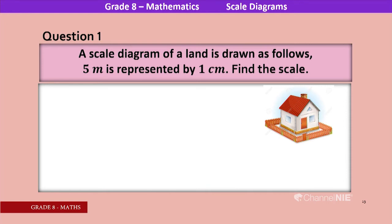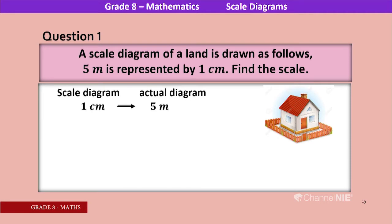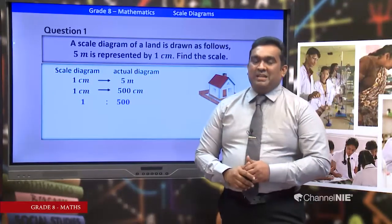Question 1: A scale diagram of a land is drawn where 5 meters is represented by 1 centimeter. Find the scale. Scale diagram to actual diagram: 1 centimeter to 5 meters. Convert 5 meters to centimeters: 5 multiplied by 100 equals 500 centimeters. Now both sides have the same unit. Without the unit, the scale ratio is 1 is to 500.